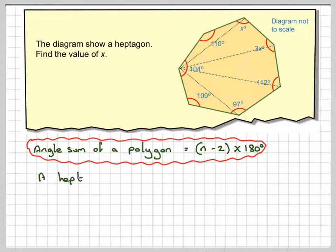So in this case we have a heptagon which has 7 sides, so n will be equal to 7.